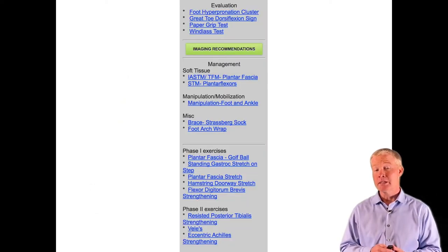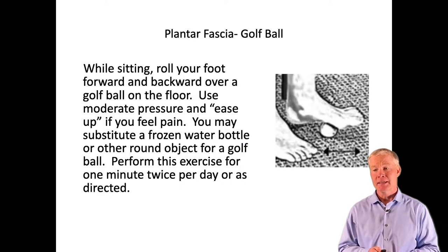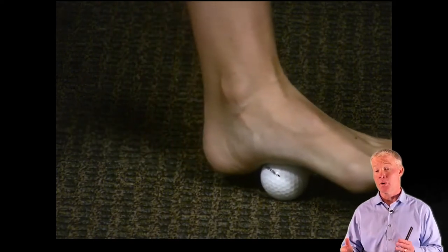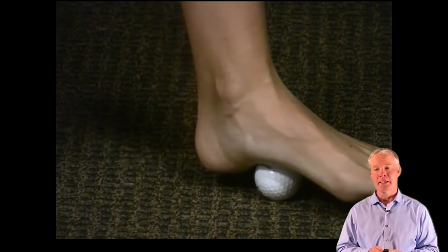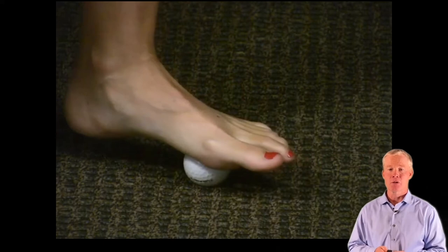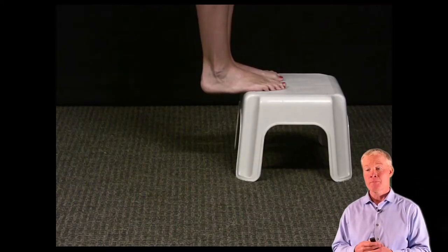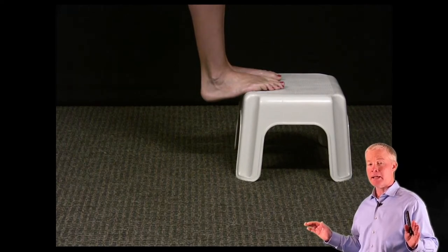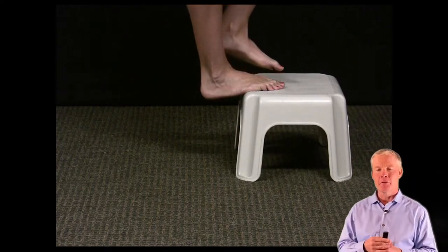At home, a crucial part of the recipe is getting blood flowing to the area and breaking things up. Have the patient roll over a frozen water bottle or a golf ball to get a little elasticity and movement in the area. Also have the patient stretch out the gastroc and soleus — tightness in the plantar flexors is a major issue. They can do this on a stairwell by dropping their feet down and gradually stretching a little further each time.